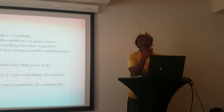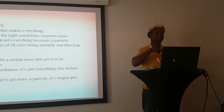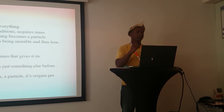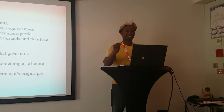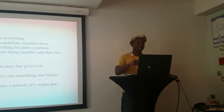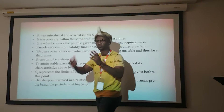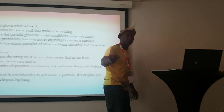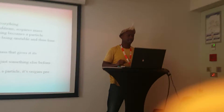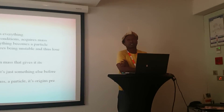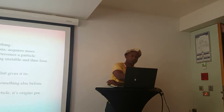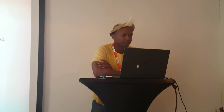SI is a property within the same stuff that makes up everything. It is what becomes the particle given the right conditions when it acquires mass. Particles follow a probability function — not everything becomes a particle. We can see in a collider exotic particles of all sizes being unstable and losing their mass because they fall out of the stable range. I say SI can only be a string, trying to be conservative and follow others that came before. To withstand stable mass, the string must have a certain mass that gives it its characteristics — between N and zero.